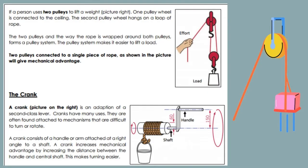If a person uses two pulleys to lift a weight, one pulley wheel is connected to the ceiling. The second pulley hangs on a loop of rope. The two pulleys and the way the rope is wrapped around both pulleys forms a pulley system. The pulley system makes it easier to lift a load. Two pulleys connected to a single piece of rope will give mechanical advantage.